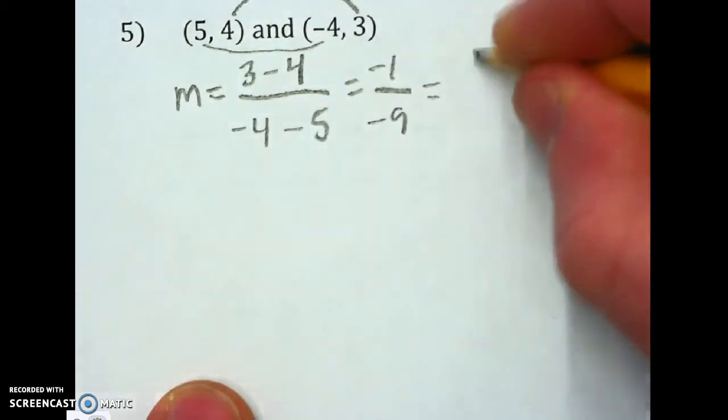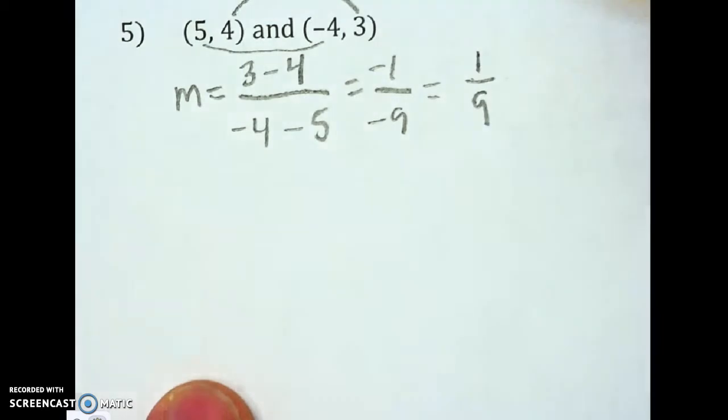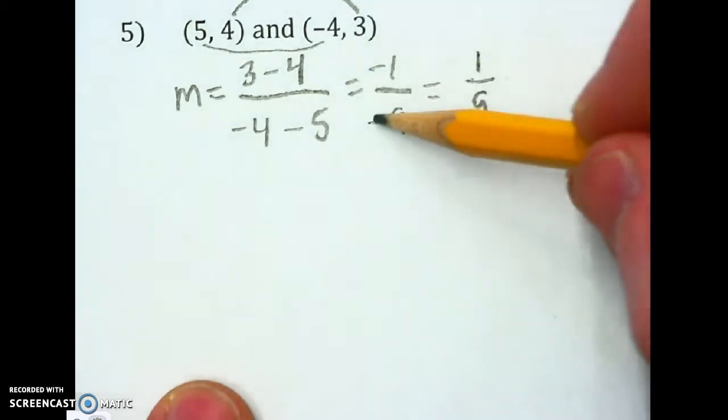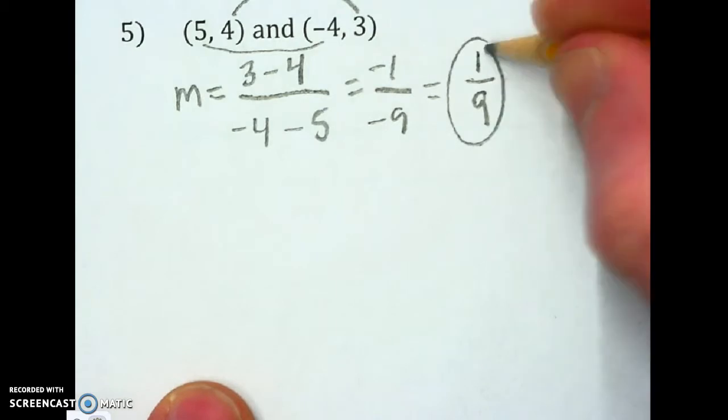And so we'll have positive 1 over 9. A negative divided by a negative is a positive. There's our slope.